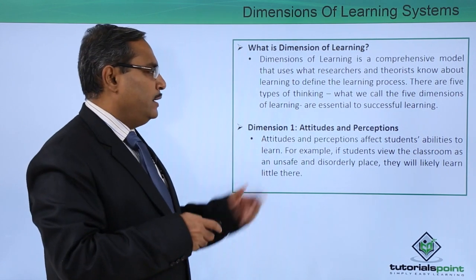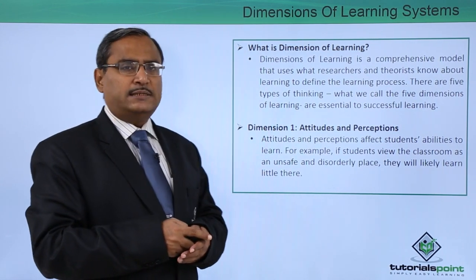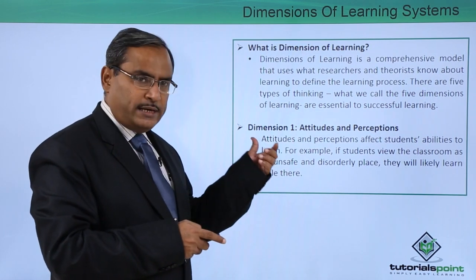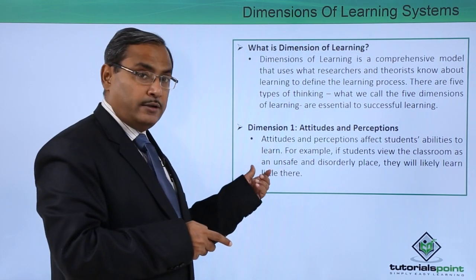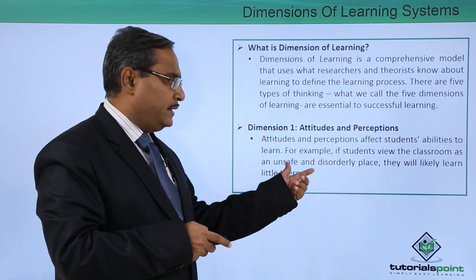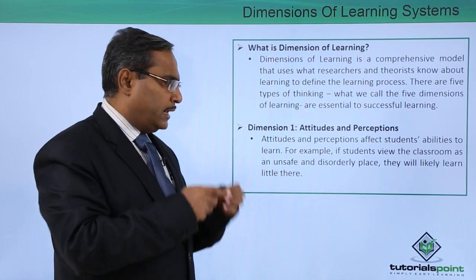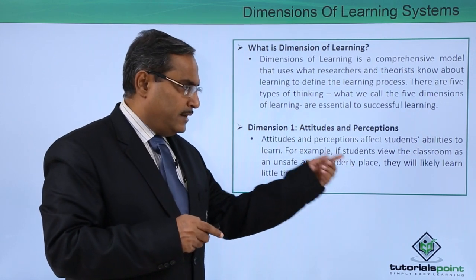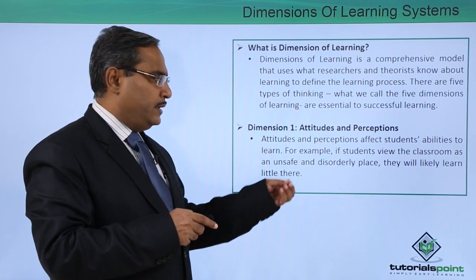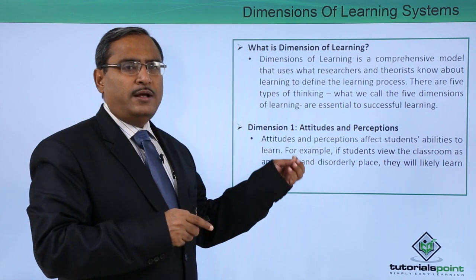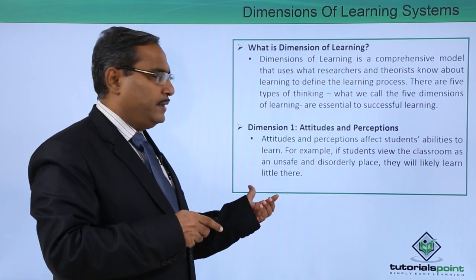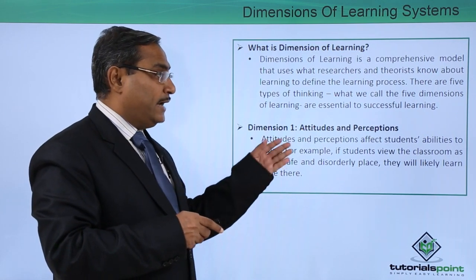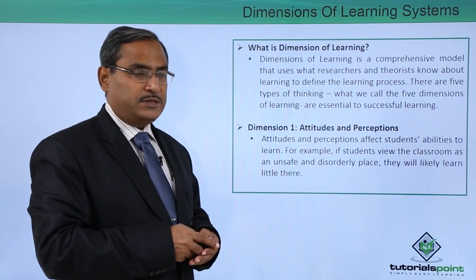Dimension number one is attitudes and perceptions. Attitudes and perceptions affect students' abilities to learn. For example, if students view the classroom as an unsafe and disorderly place, then obviously the student will not like to use that place for their learning process — they will learn little there.